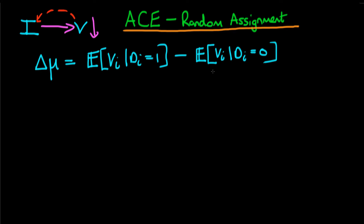In this video I want to talk about how random assignment of treatment can actually allow us to evaluate the average causal effect. What we're interested in is whether, in a conflict area, infrastructure spending actually causes a decline in the level of violence.